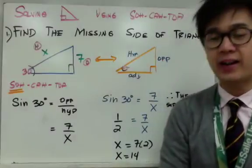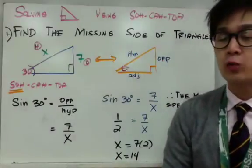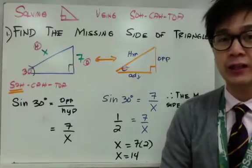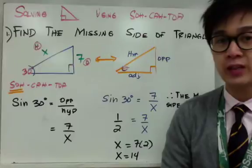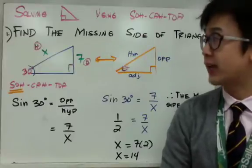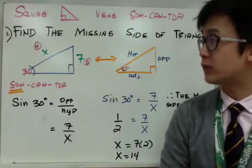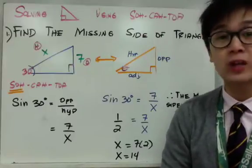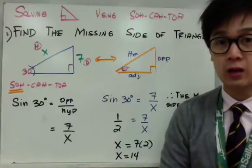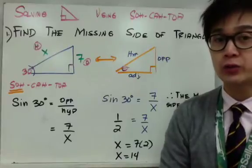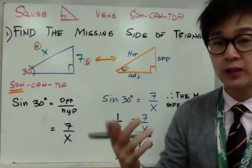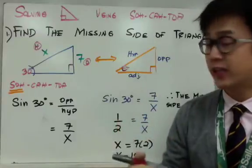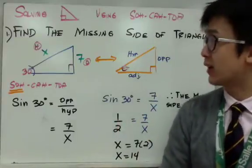Whenever we're solving a right triangle, we are usually given two sides and need to find the third side — it could be the hypotenuse, the opposite side, or the adjacent side. But in this case, we're going to be given only one side of the right triangle and we're supposed to find either the hypotenuse or the adjacent side.